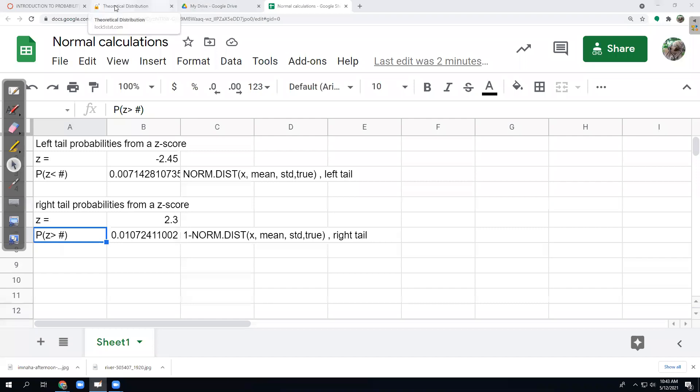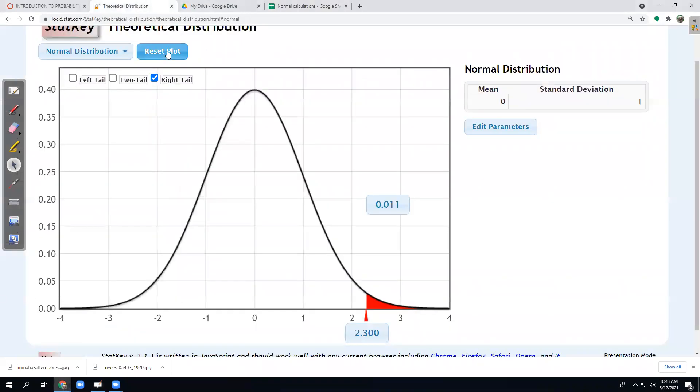Spreadsheet, different formula. So StatKey here. It's going to reset. Now they're asking about z-scores. Mean of z-scores is zero. Standard deviation is one. So I'm good there with the default. And here they're showing me a left tail. They want 92% in the left tail.